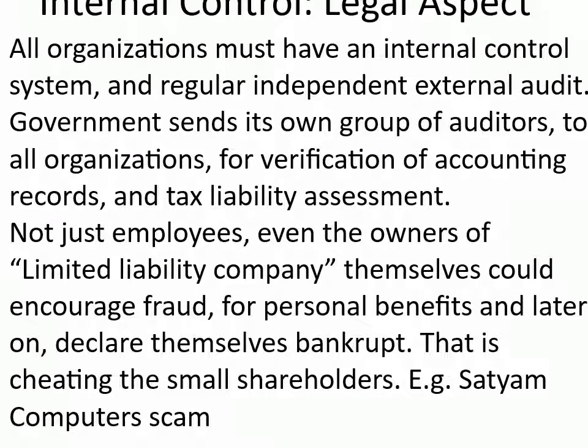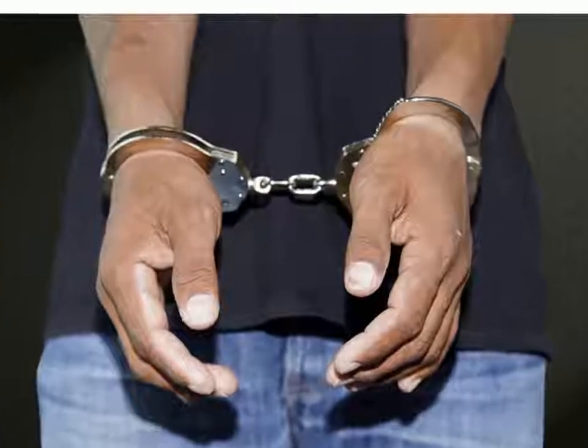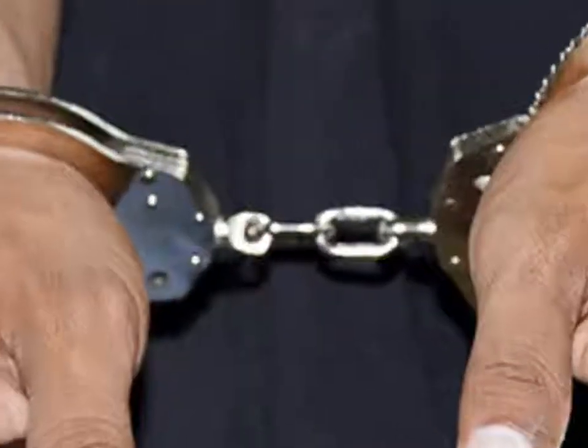Fraud and internal control — legal aspect: All organizations must have an internal control system and regular independent external audit. The government sends its own group of auditors to all organizations for verification of accounting records and tax liability assessment. Not just employees — even the owners of a limited liability company themselves could encourage fraud for personal benefits and later declare themselves bankrupt, cheating small shareholders. For example, the Satyam Computers scam. All employees must take precautions and not get involved in financial irregularities.